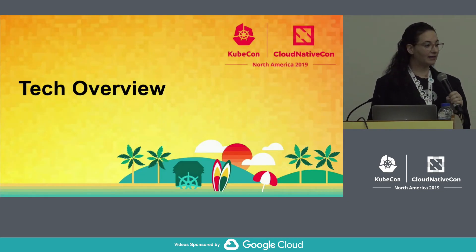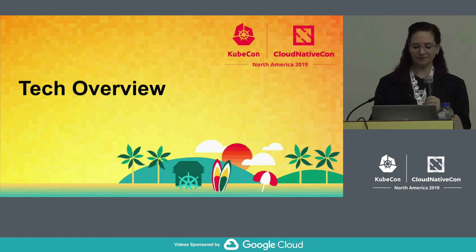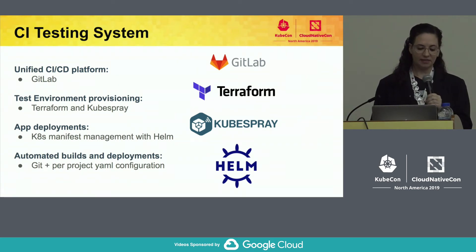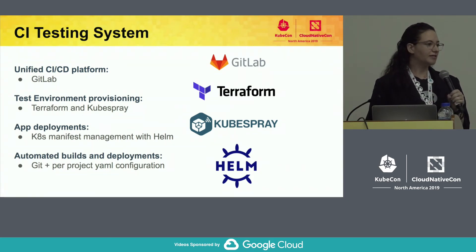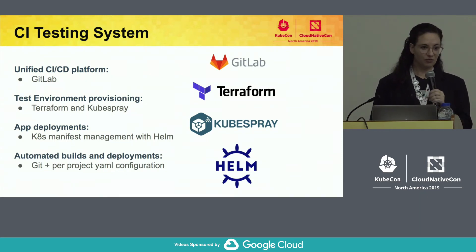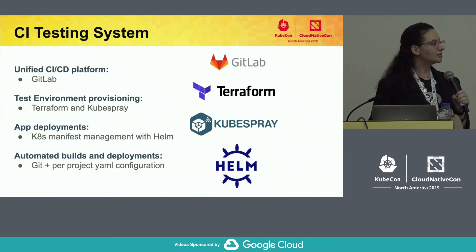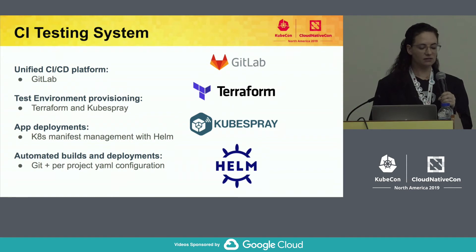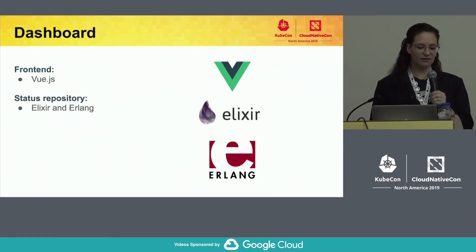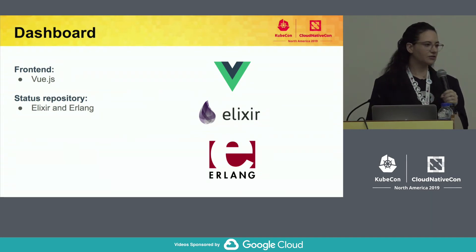Let's take a look behind the scenes at some of the technologies used for the CI dashboard. The CI/CD platform under CNCF-CI is GitLab. The test environment is provisioned with Terraform and KubeSpray. We use Helm for app deployments and Git and per-project YAML configurations for the build and release. The front end is Vue.js and the status repo uses Elixir and Erlang.